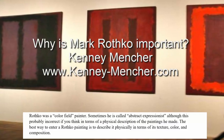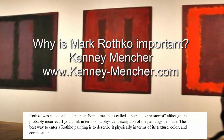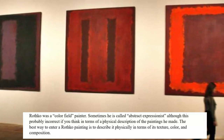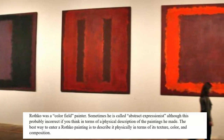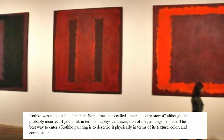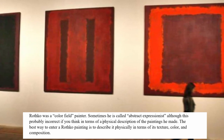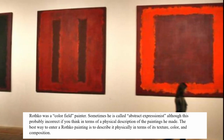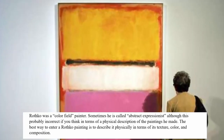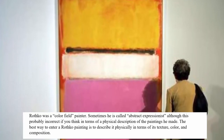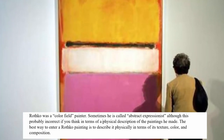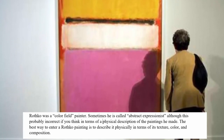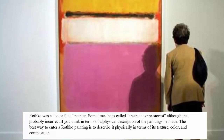Mark Rothko was a color field painter, sometimes called an abstract expressionist. But I think this is slightly incorrect if you think about the painting in terms of a physical description. The best way to look at a Rothko painting is to describe it in terms of its texture, color, and composition, and that'll give you an entryway.